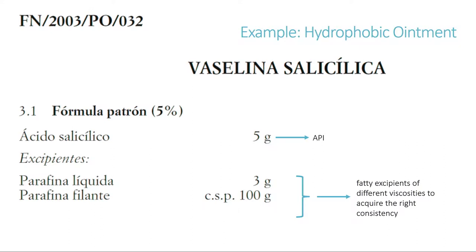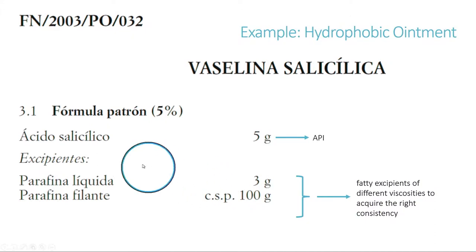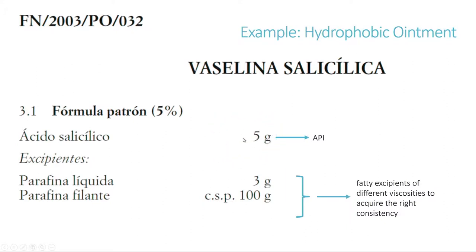In this slide you can see a typical example of the Spanish national formulary, which is the salicylic vaseline. This is a formula for a 5% content in salicylic acid for an amount of 100 grams. The API in this case is salicylic acid at 5%, and as excipients we have liquid paraffin and solid paraffin. They are fatty excipients of different viscosities that in the end produce the right consistency. However, the liquid paraffin will be used also as a levigation agent to produce the flow of the salicylic acid and therefore make it easier to be incorporated into the solid paraffin in a more homogeneous way.